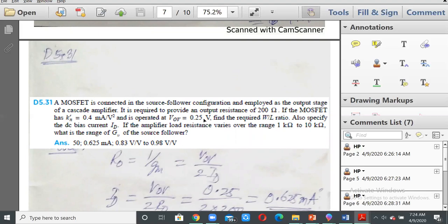The MOSFET has k prime equal to 0.4 milliampere per volt squared and is operated at VOV equal to 0.25 volts. Find the W by L ratio, also specify the DC bias current ID, and if the amplifier load resistance varies over the range 1 kilohm to 10 kilohms, what is the range of gv?